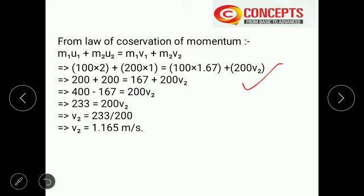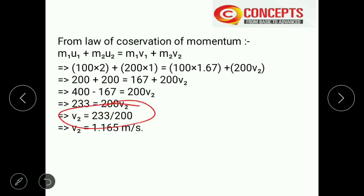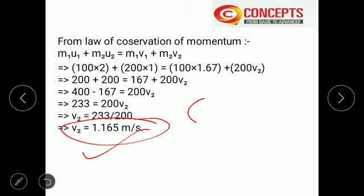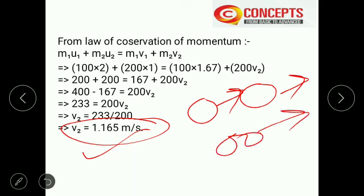Applying conservation of momentum: 100 × 2 + 200 × 1 = 100 × 1.67 + 200·V2 → 200 + 200 = 167 + 200·V2 → 400 − 167 = 200·V2 → 233 = 200·V2 → V2 = 233/200 = 1.165 m/s. The answer is positive because both objects were moving in the same (positive) direction before and after the collision.